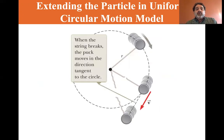If the string were to break, the puck would move in the direction tangent to the circle. In other words, it's moving from Newton's first law: an object in motion tends to stay in straight line motion unless acted upon by an external force. The external force here is the string. If the string breaks, it's going to go in straight line motion.